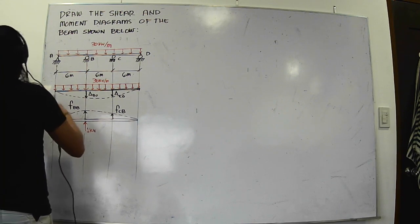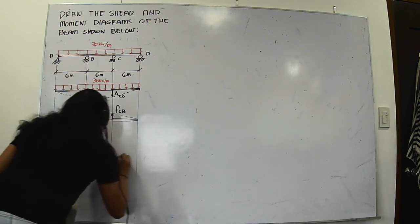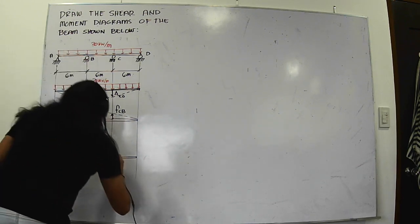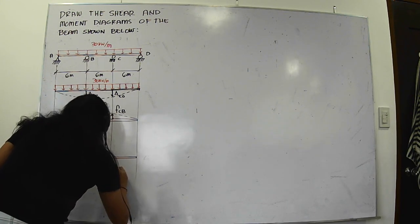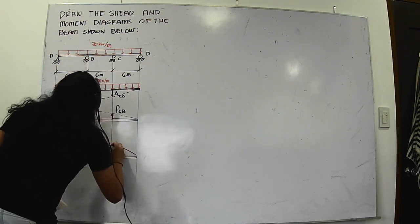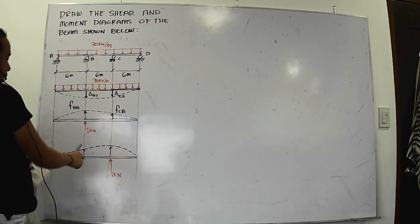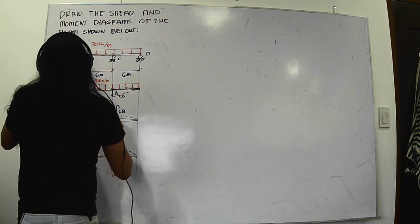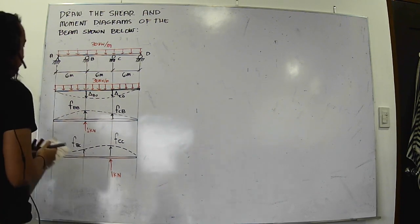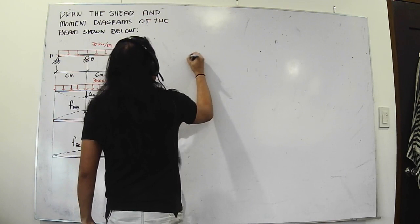Now the case for the redundant C, which we are reintroducing into the system. Reintroducing the redundancy — one kilonewton jacks it up. So this is FCC and this should be FBC. We need the compatibility equations — plural.